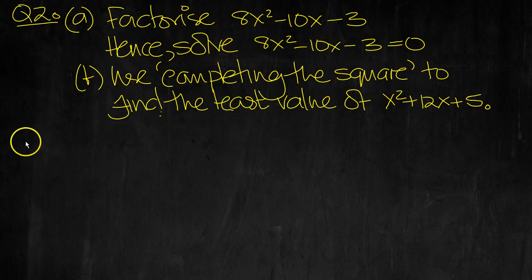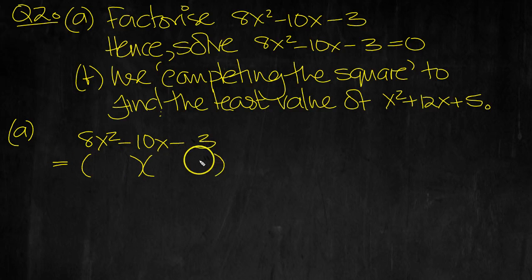So first of all, factorise. So we've got 8x² - 10x - 3 is equal to... It has to be 3×1s. Because this is minus, I'm assuming that the minus is that way round, hopefully.